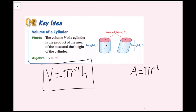Here we have a right cylinder and here we have an oblique cylinder, and the formula is the same for both. The thing to note is that the height of the oblique cylinder is not the slant length — this is a different length. And it's the same distinction for the right cylinder.